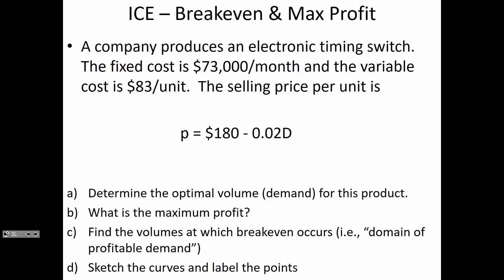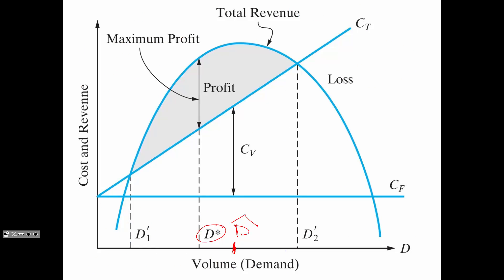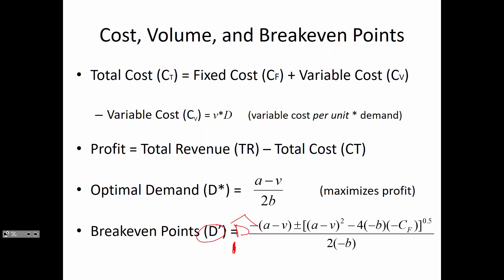Any questions about that? So the formula for the break-even points is given there. Here's the formula for optimal demand, D star. This is the in-class exercise I have for you today. You're in a company that produces an electronic timing switch. You've got fixed costs and variable costs. And then the marketing department has gone and done some research and they know the relationship between price and demand. So I'd like you to calculate optimal demand, maximum profits, break-even points, and then to draw the curve. The curve I want you to draw should look like this. So sketch this curve once you've solved the A through C, and then label the points with the numbers you calculated earlier on.